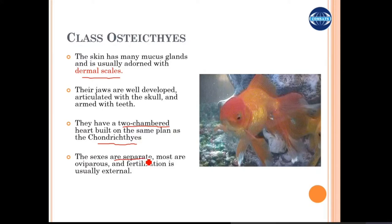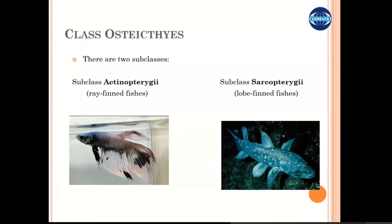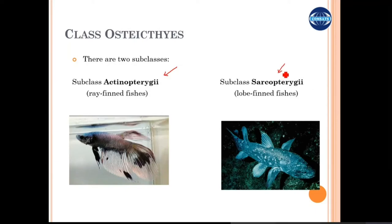They have separate sexes and fertilization is external. Osteichthyes has two subclasses: Actinopterygii and Sarcopterygii.